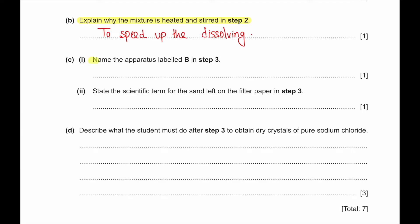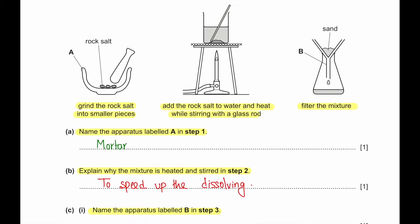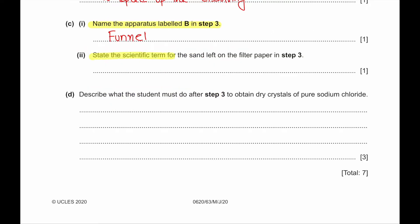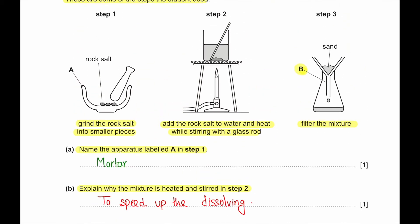Part C. Name the apparatus labeled B in step three. The labeled B apparatus is a filter funnel. State the scientific term for the sand left on the filter paper in step three. Anything that is left on the filter paper is known as residue. So the sand left on the filter paper will be the residue.